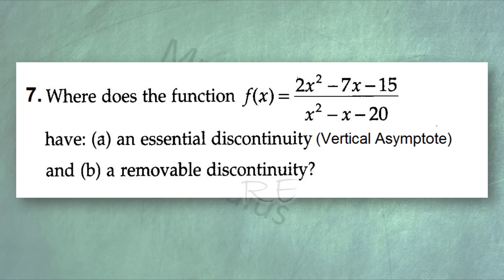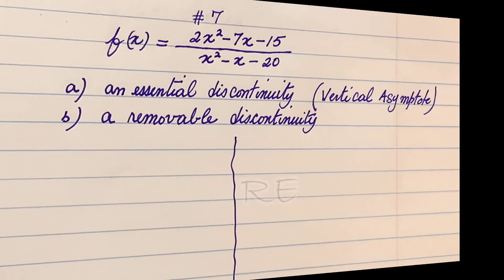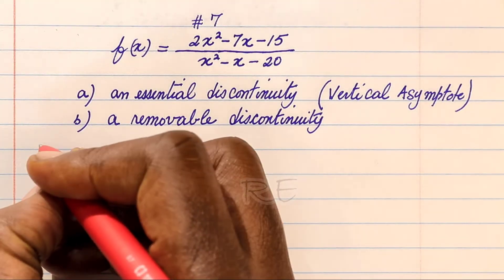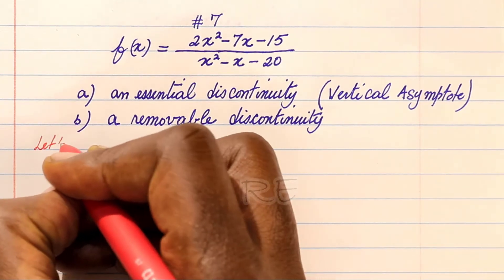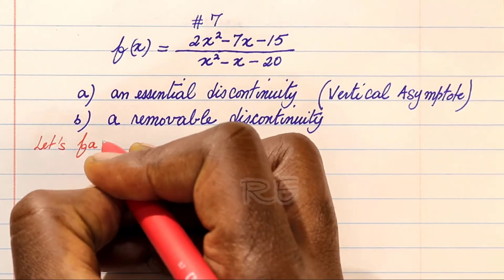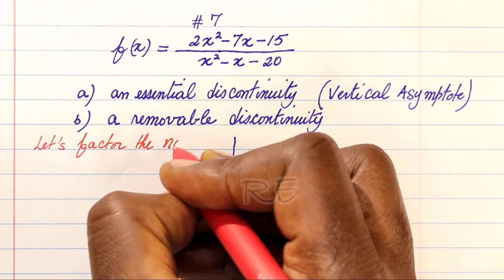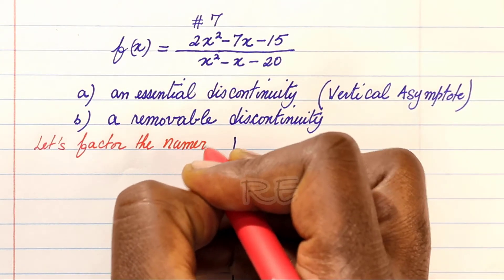A removable discontinuity is usually expressed by a point where there's a gap in the function, usually causing the function to be zero over zero, the indeterminate form.